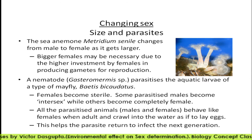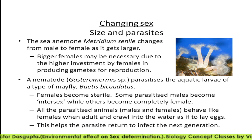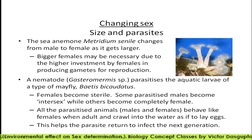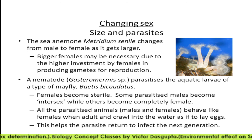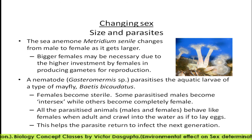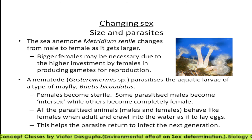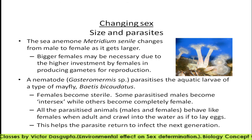Some parasites cause males to become intersex while others become completely female. In all parasites in animals, males and females behave like females when adult and crawl into the water as if to lay eggs. This helps the parasite to infect the next generation.